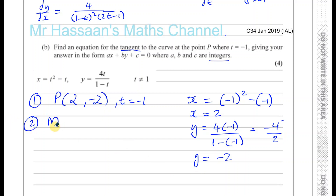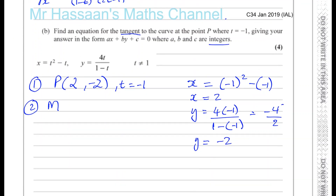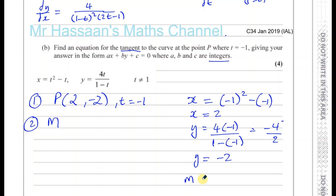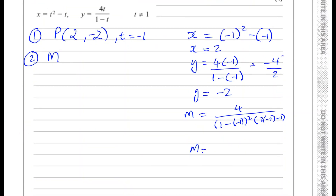Now the gradient can be found using dy dx. So the gradient is equal to 4 over 1 minus minus 1 all squared, times 2 times minus 1 minus 1. So m equals 4 divided by — this is 1 plus 1 which is 2, 2 squared which is 4 — times minus 2 minus 1, which is minus 3. So you end up with 4 divided by minus 12.